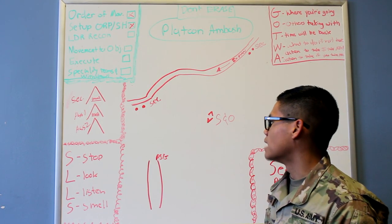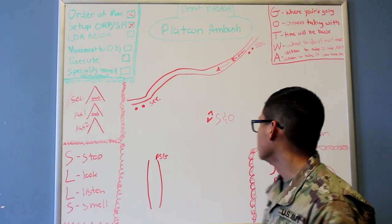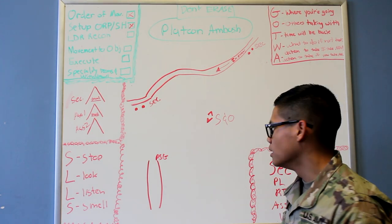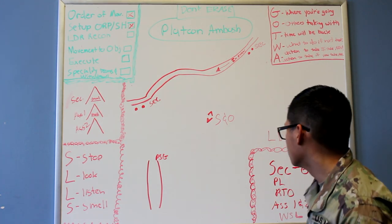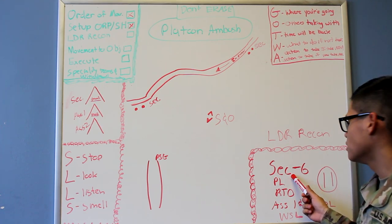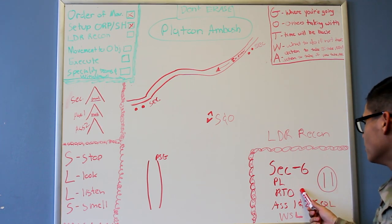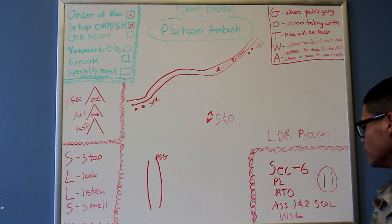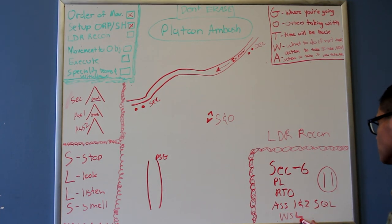Once the ORP is established, the PL will be getting ready to go into leaders recon. Into the leaders recon, the PL will be taking 6 from security squad, himself, the RTO, Assault 1 and 2 squad leaders, and the Weasel, which is the weapon squad leader, for a total of 11 people.